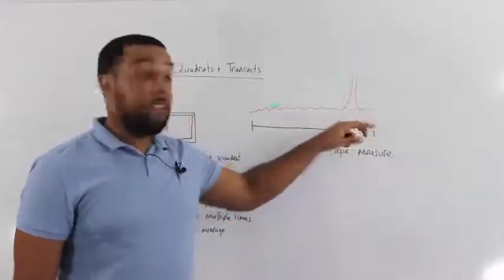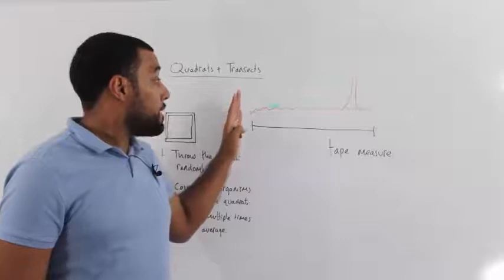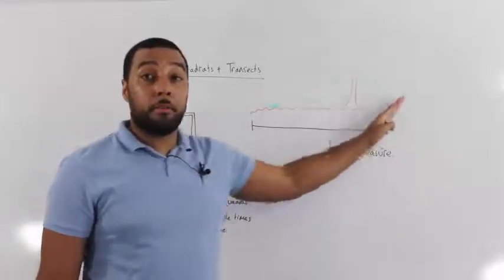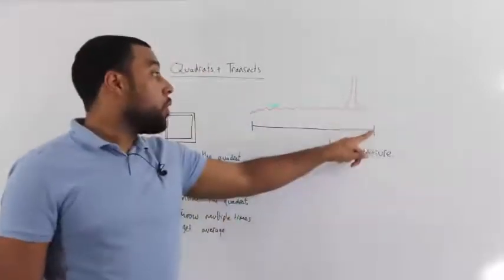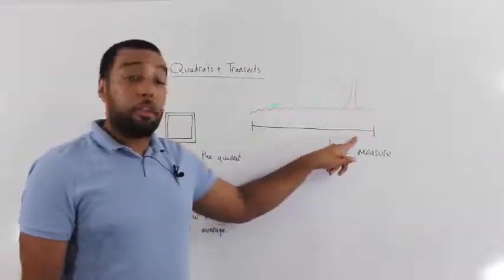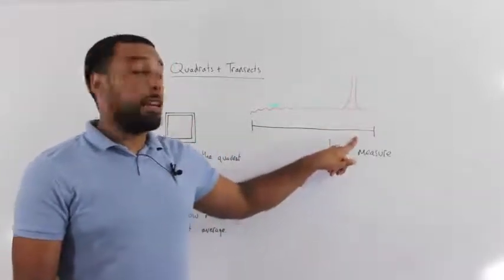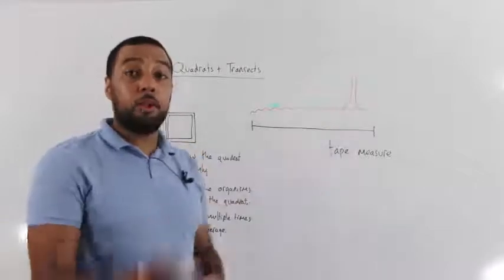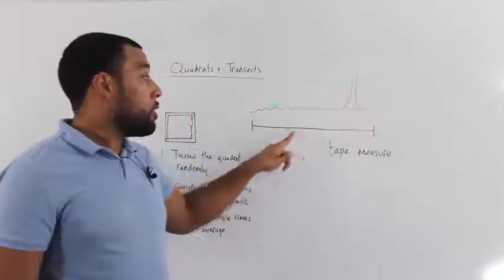We would then walk along, and this is our transect—the space from one end to the other. What we would do is walk along this transect with a quadrat, throwing the quadrat randomly to measure the different organisms along the transect.